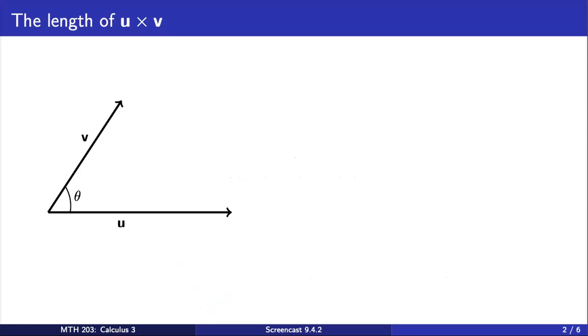Just as we found for the dot product in the last section, the cross product of two vectors provides us with useful geometric information. Consider two vectors u and v drawn with their tails touching, where the angle between them is denoted by theta, as we have here.